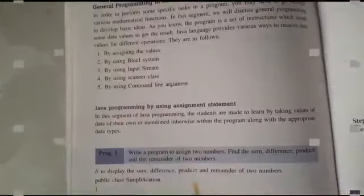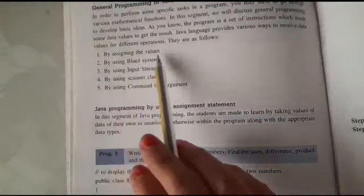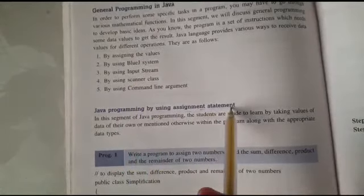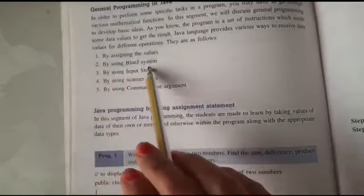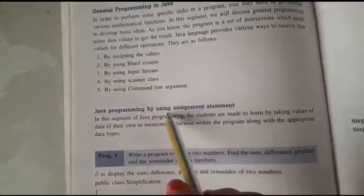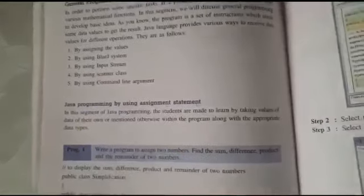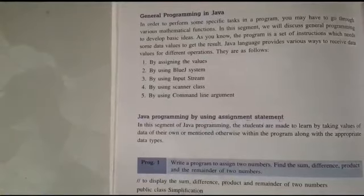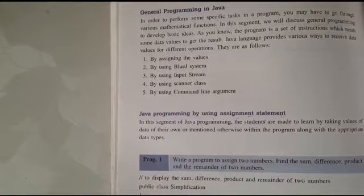Understood? In this video I have explained Java programming by assigning the values — Java programming by using assignment statement. In my second video I will explain by using BlueJ system — Java programming by using BlueJ system. Now you will practice these examples in your notebook and then tell me what answer will come. I will continue this chapter in the upcoming video. If you have any query, you can ask me through email. I hope to see you soon in class. Stay home, stay safe. Thank you students.